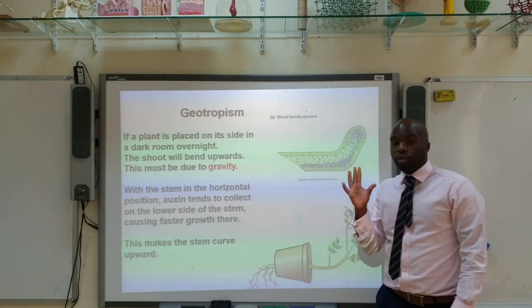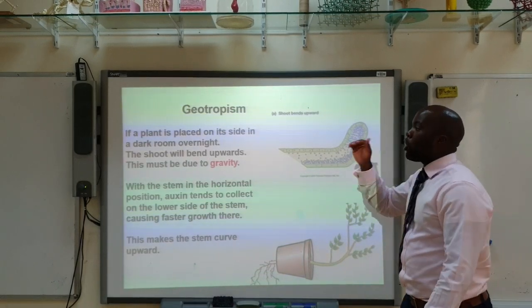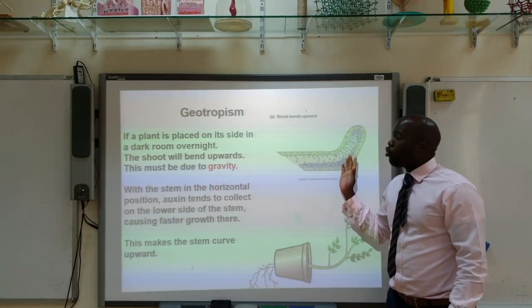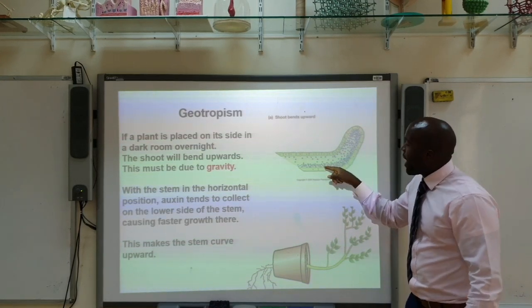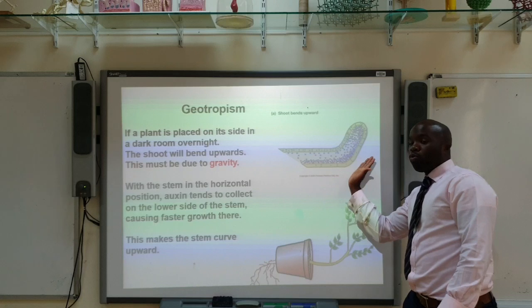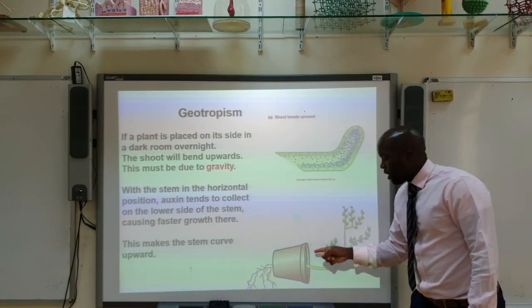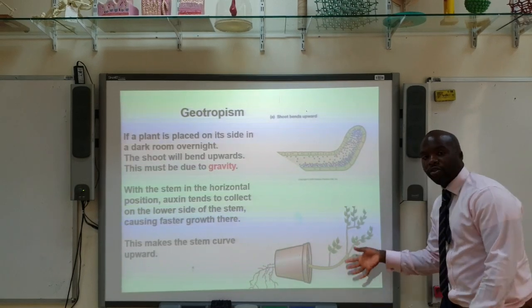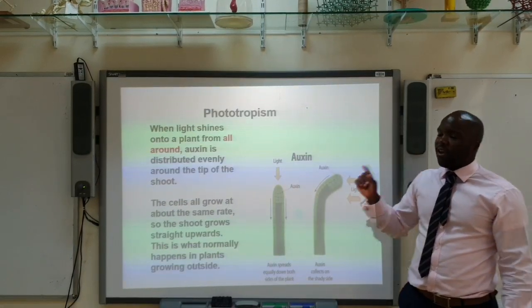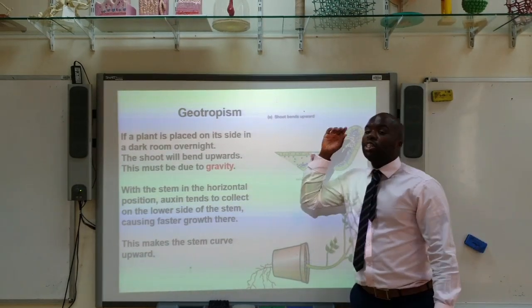In a shoot placed on its side in a dark room, the auxin will concentrate on the lower side. Again, auxin causes those lower cells to elongate and grow at a faster rate, which causes the shoot to bend upwards. This gives the leaves as much light as possible. The response to light is called phototropism, while the response to gravity is known as geotropism.